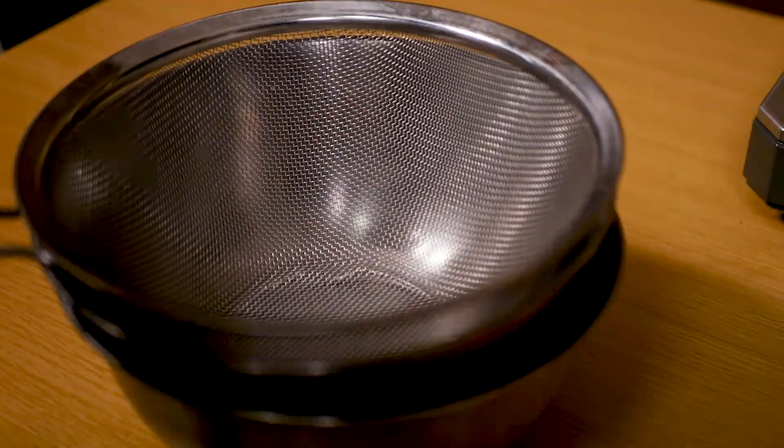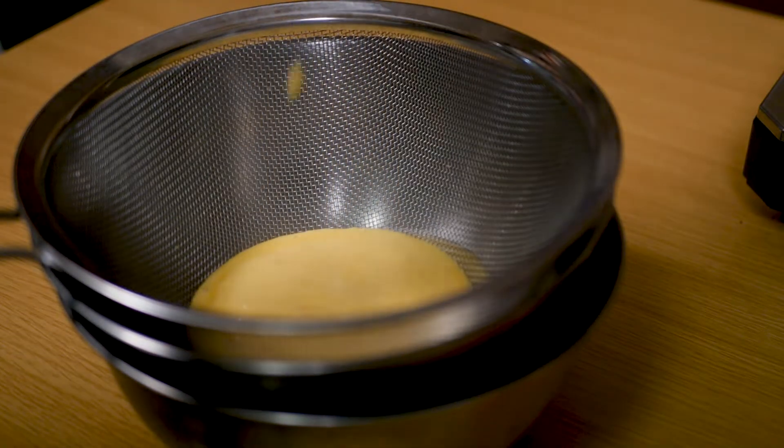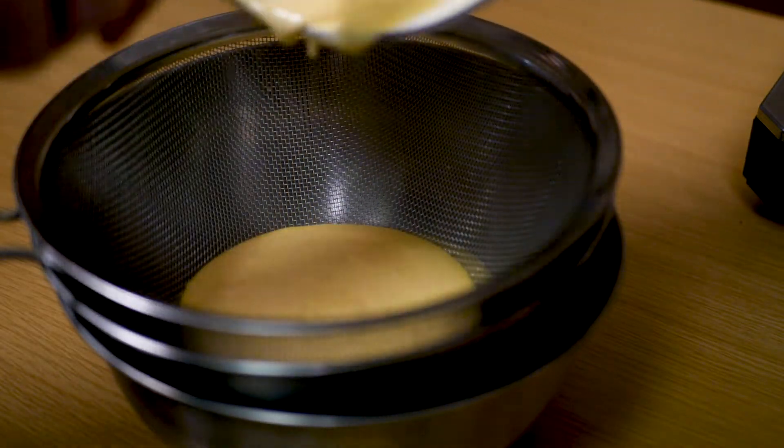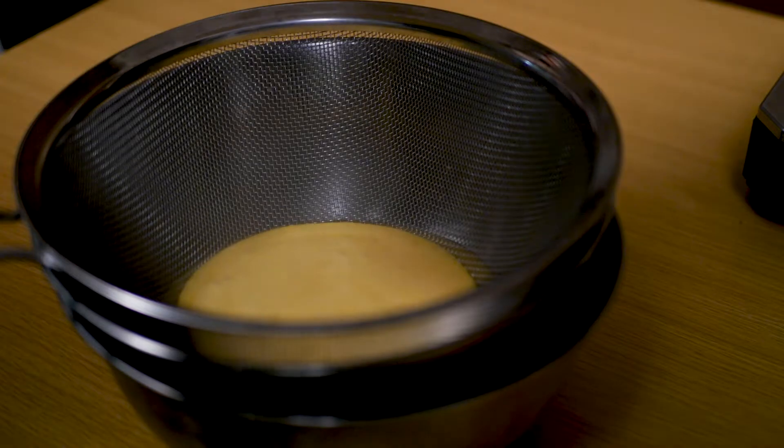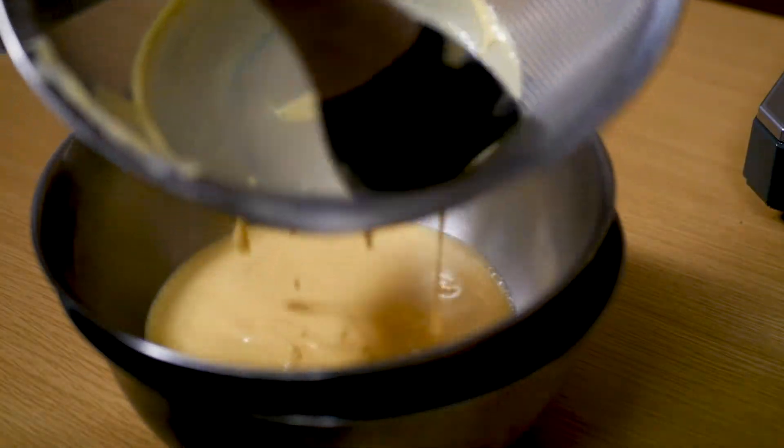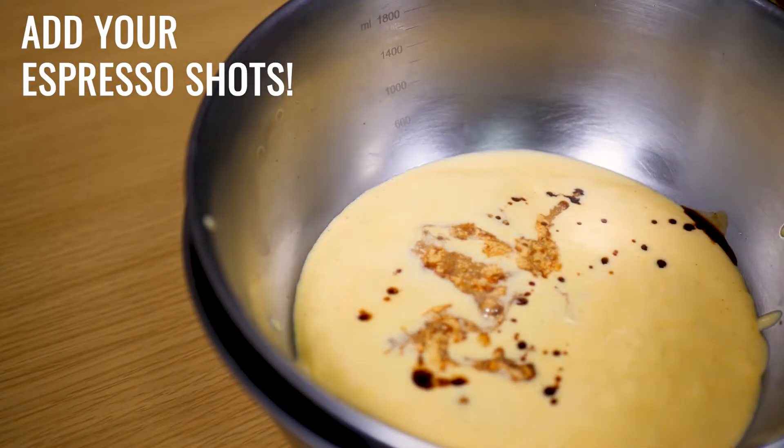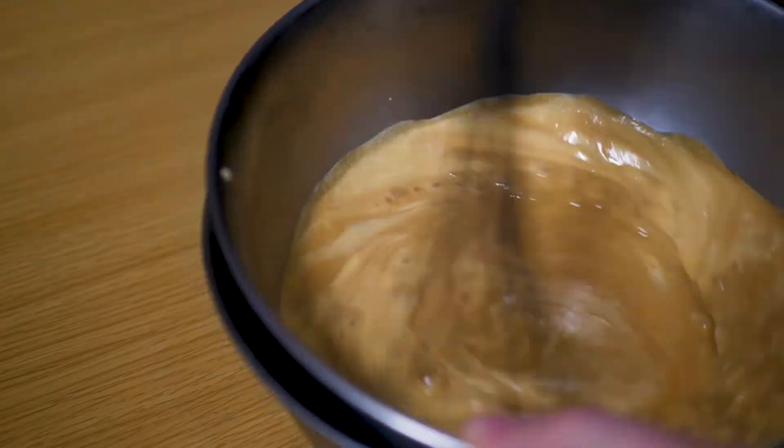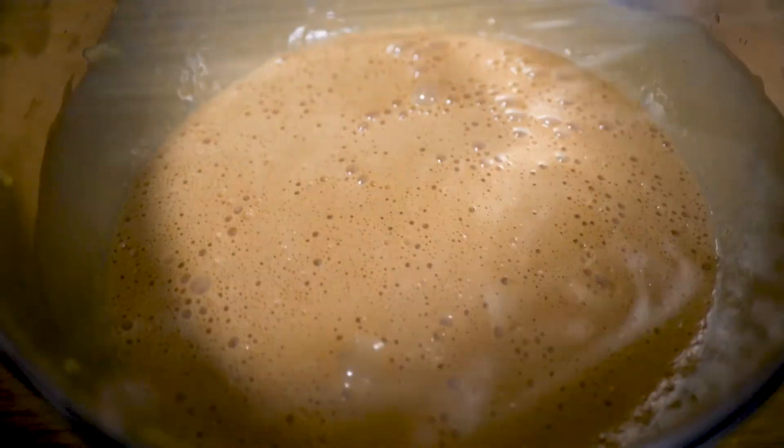We're going to strain this custard through a sieve into a bowl sitting in an ice bath which will cool down our mixture. Whisk once or twice in the 10 or 20 minutes it takes to cool down a little bit, and once it's chilled you can plastic wrap the bowl and put it in your fridge for at least an hour to cool down before you put it into your ice cream maker.